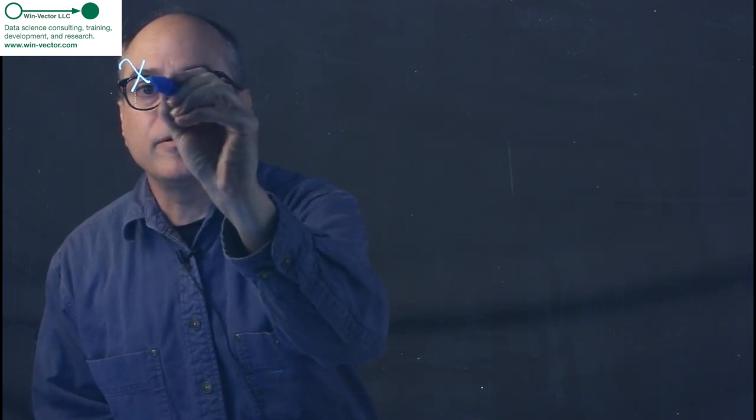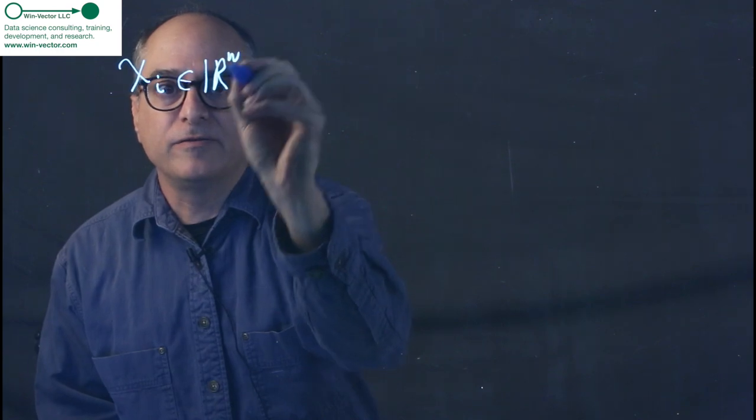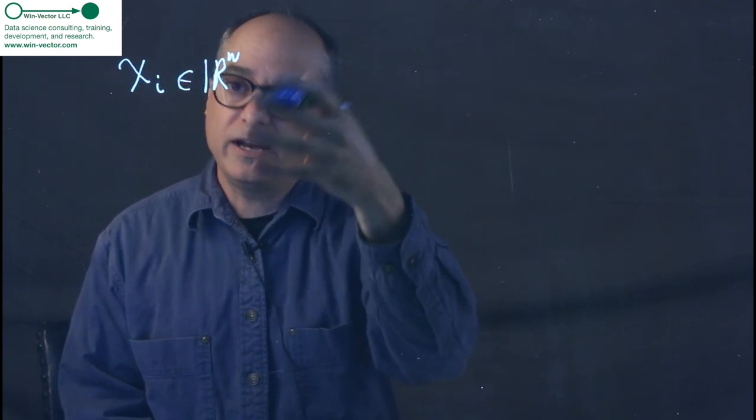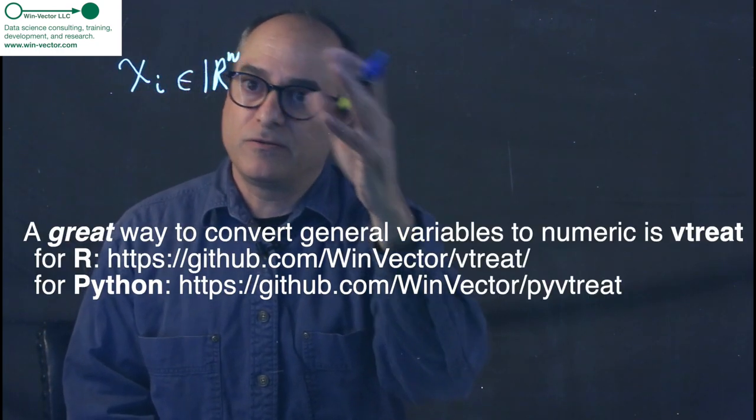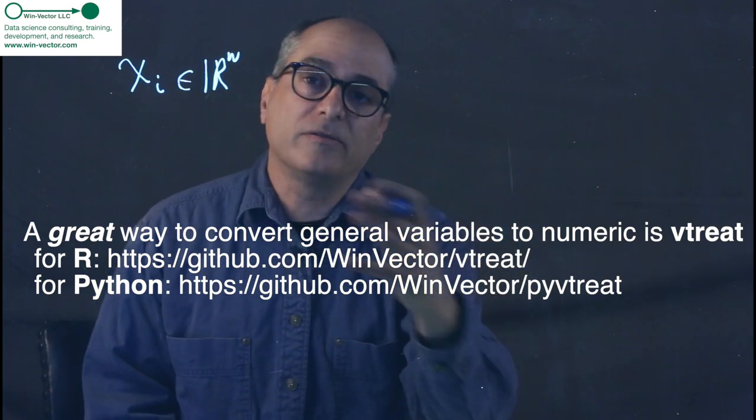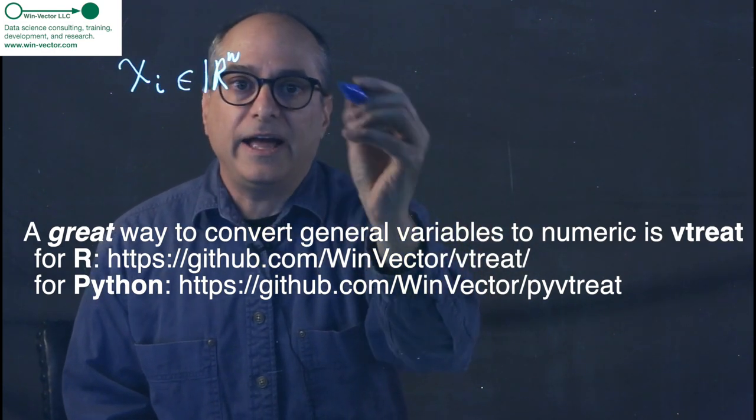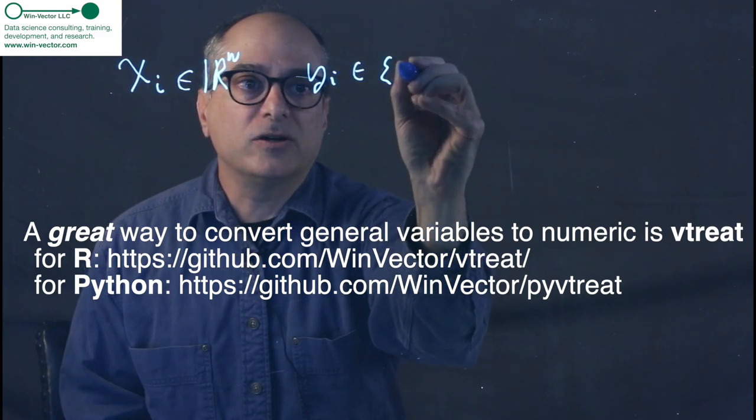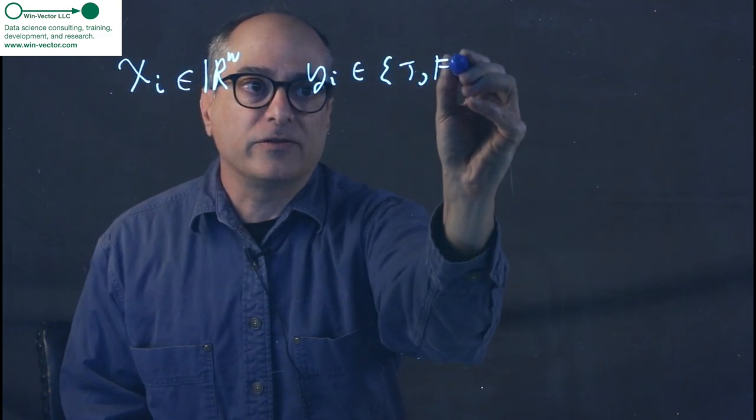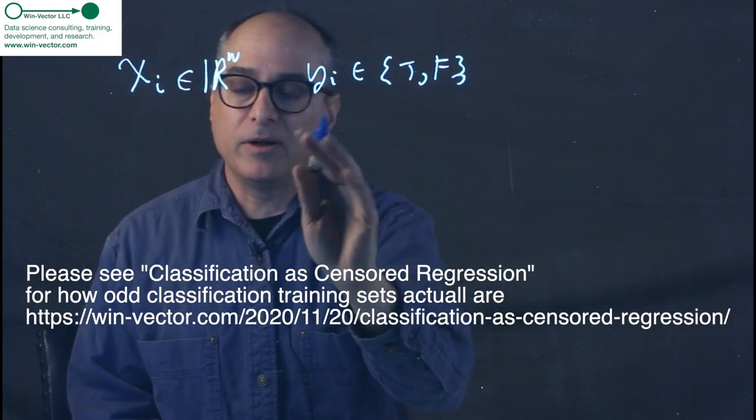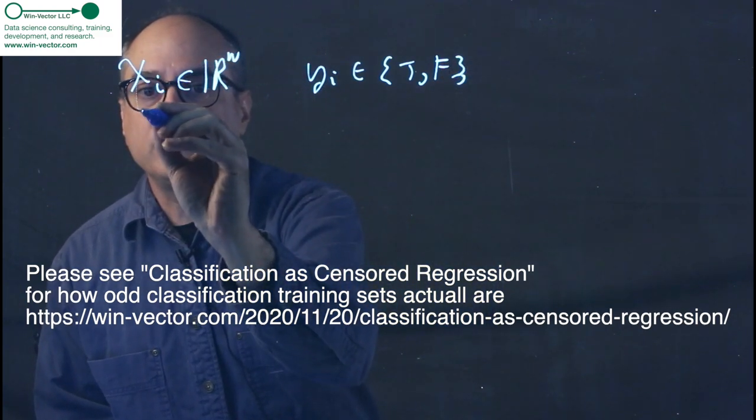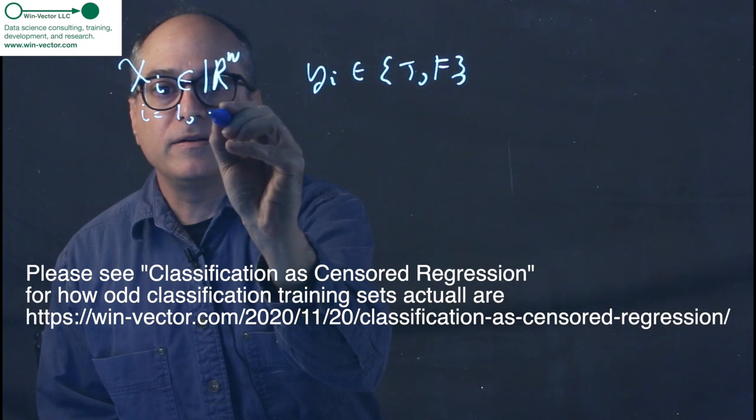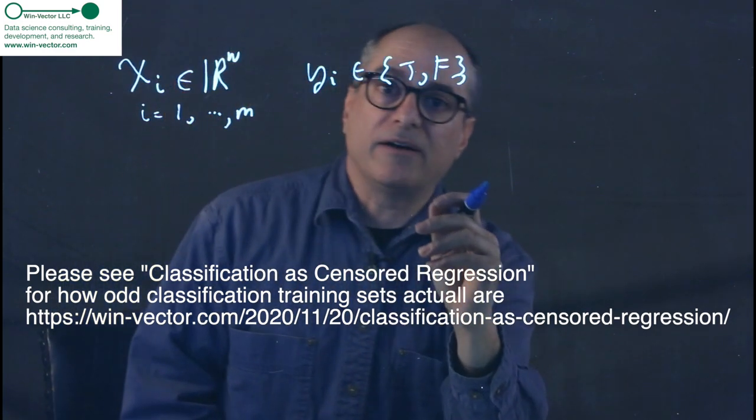We're going to talk about a supervised machine learning situation. So we have datums Xi that are in R^n, so they're vectors of n real numbers, possibly converted from other data types such as categorical variables. And we have Yi in the set true-false, so it's a classification problem. And we have i ranges from 1 to m, so this is how many data rows we have.